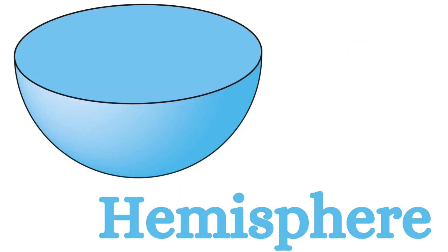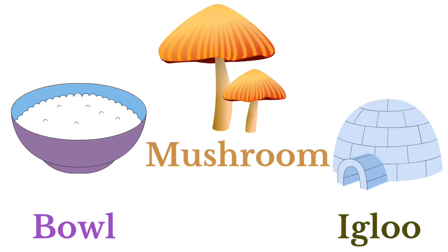Next we will see about hemisphere. This is the shape of a hemisphere. Let us see some few examples for the shape of hemisphere: bowl, mushroom, igloo.